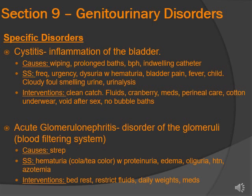Interventions for cystitis: you want to take a clean-catch urine sample, increase fluids, drink cranberry juice. Give medications like antimicrobials. You want them to have good perineal care — wear cotton underwear, void after sex, and no bubble baths. Just think of your regular urinary tract infection management.